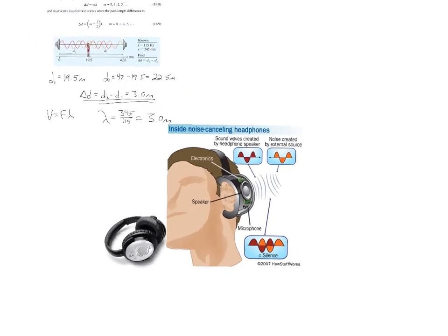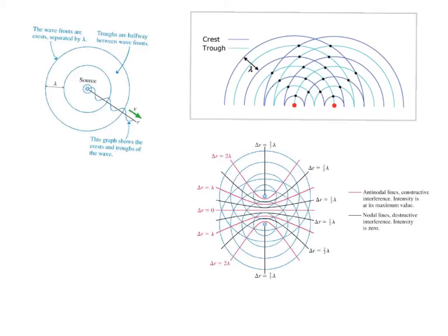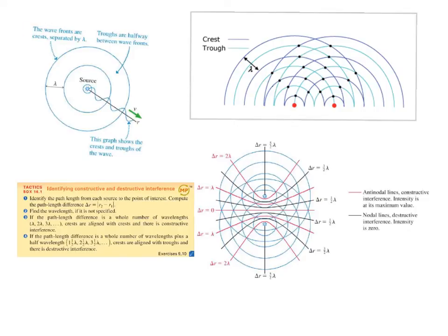This interference along a line illustrates the idea, but it's not really realistic. In practice, sound waves or light waves spread out spherically — they're spherical waves. Here is a diagram of a spherical wave; the wave fronts represent crests of the wave and are spaced by a wavelength. Halfway between two wave fronts is the trough of the wave. When two spherical waves overlap, we end up with a pattern of constructive and destructive interference. Constructive interference occurs where two crests overlap, and destructive interference occurs where a crest overlaps a trough. The conditions are the same for spherical waves as for waves along a line.